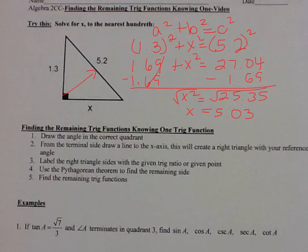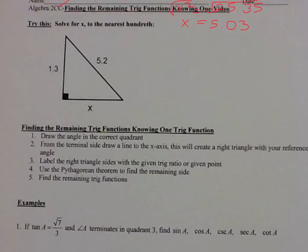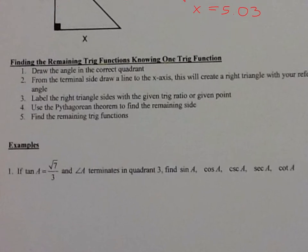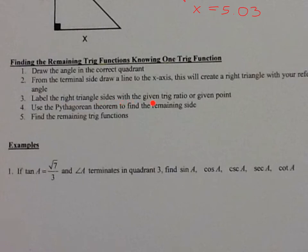Now let's see what we have to do when we have one trig function and we want to find the remaining five trig functions. The steps are: first, draw your angle in the correct quadrant. From there, from the terminal side, draw a line to the x-axis — this will create a right triangle with your reference angle. Label the right triangle sides with the given trig ratio or the given point. Then use the Pythagorean Theorem to find the remaining side. Then you can find all your missing trig functions.